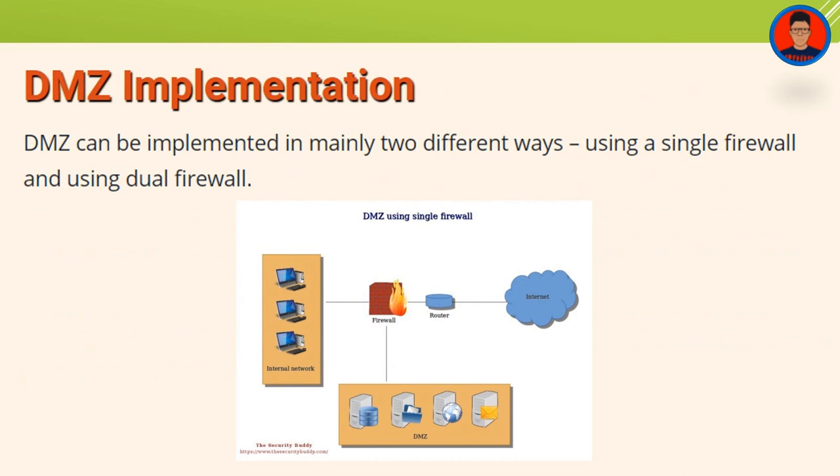DMZ can be implemented in mainly two different ways: using a single firewall or a dual firewall. In the single firewall scenario, traffic flows from the internet and untrusted network to the router, then the router passes traffic to the firewall. The firewall has two zones: the internal zone and the DMZ zone. Your database should not be in the DMZ zone because you would not publish it to the untrusted network.